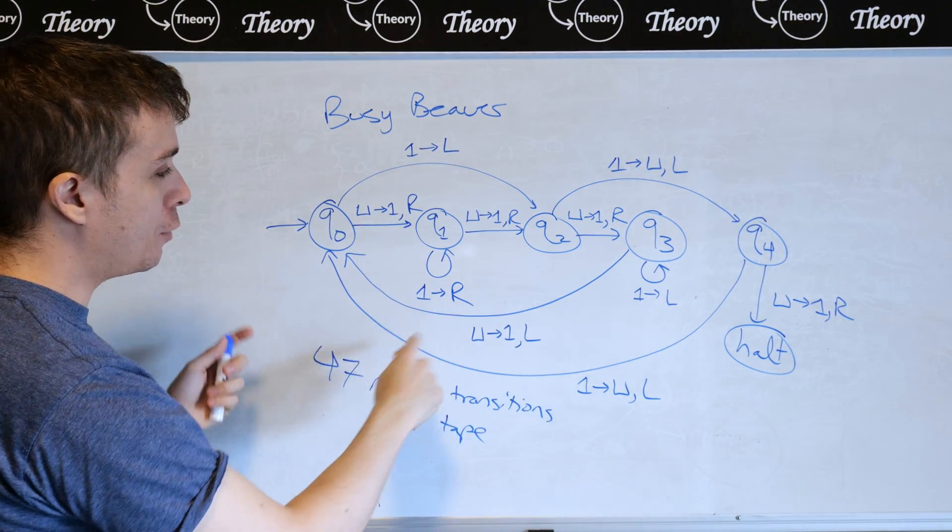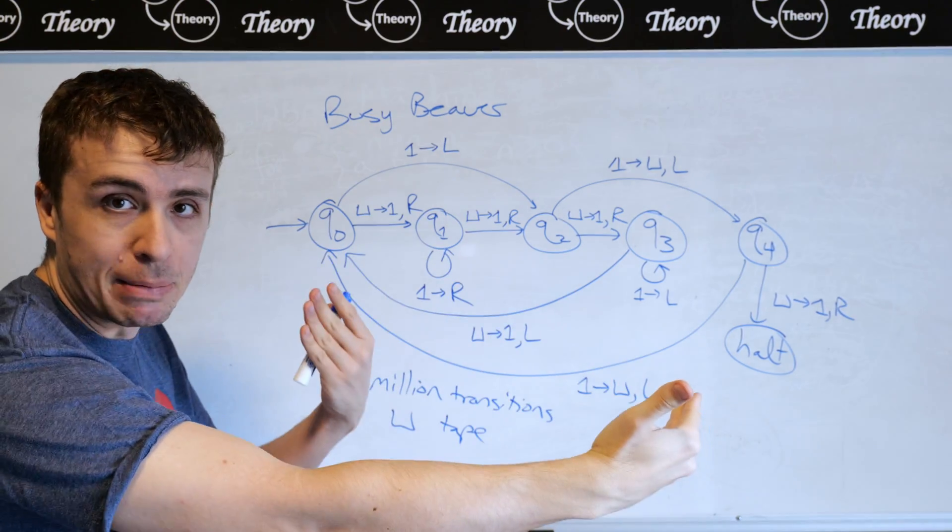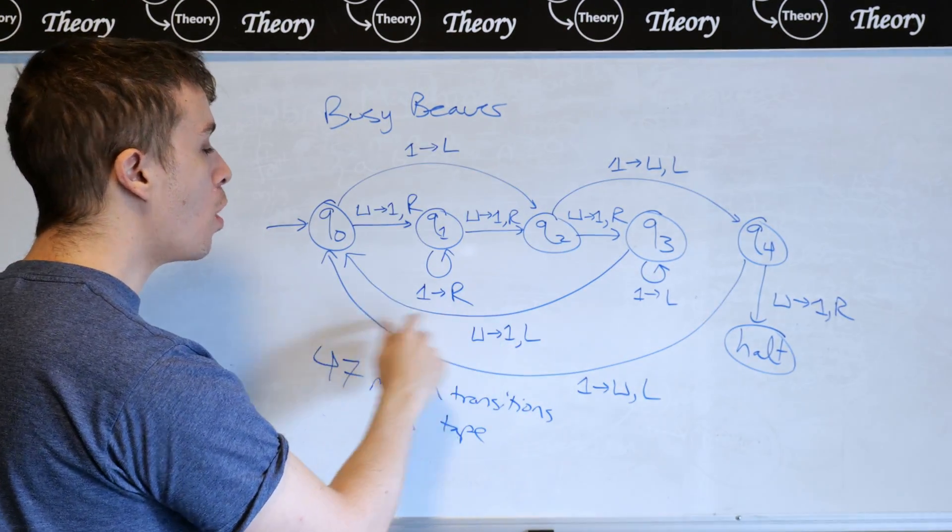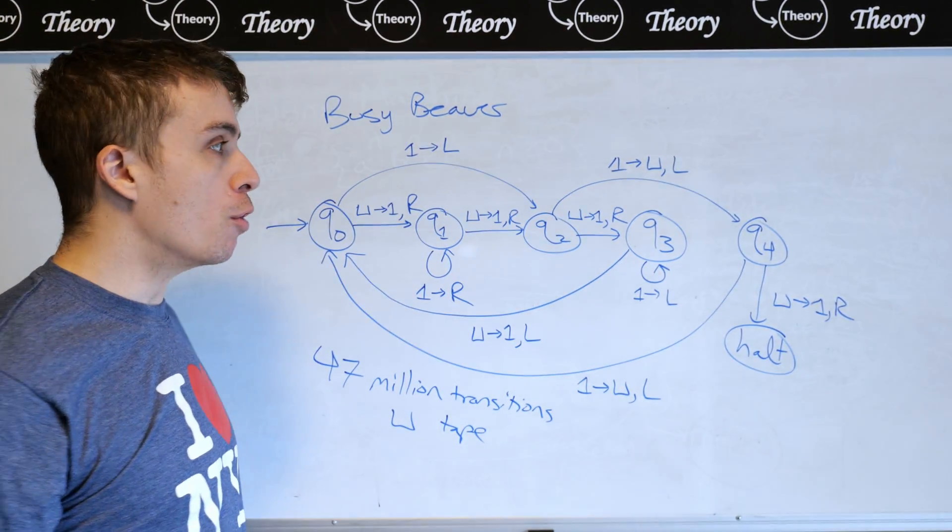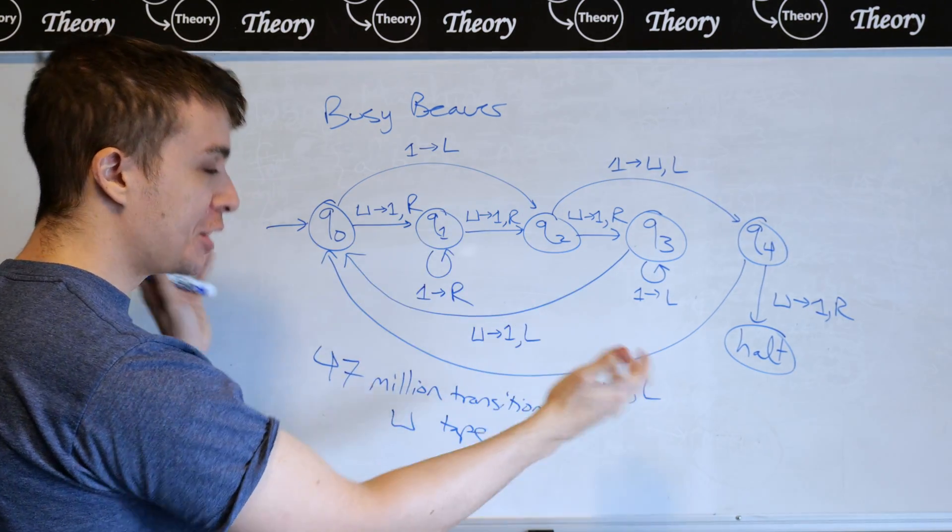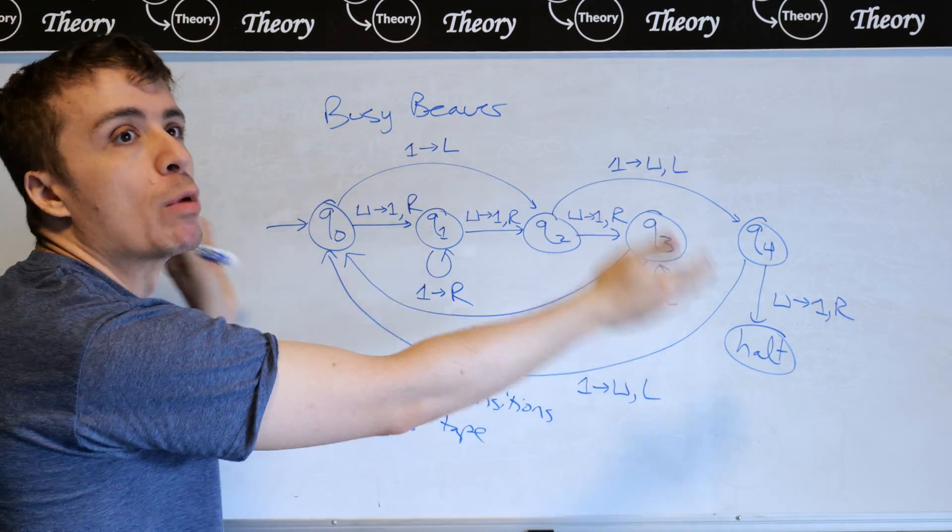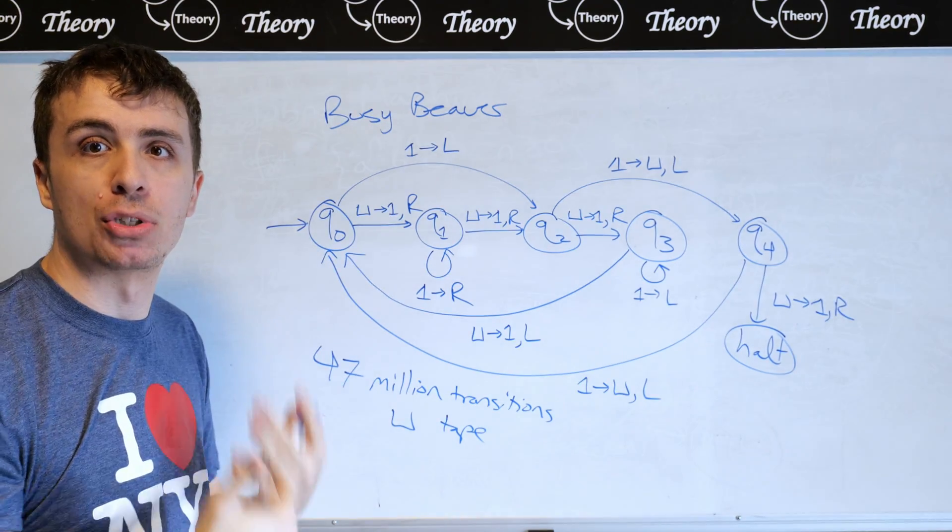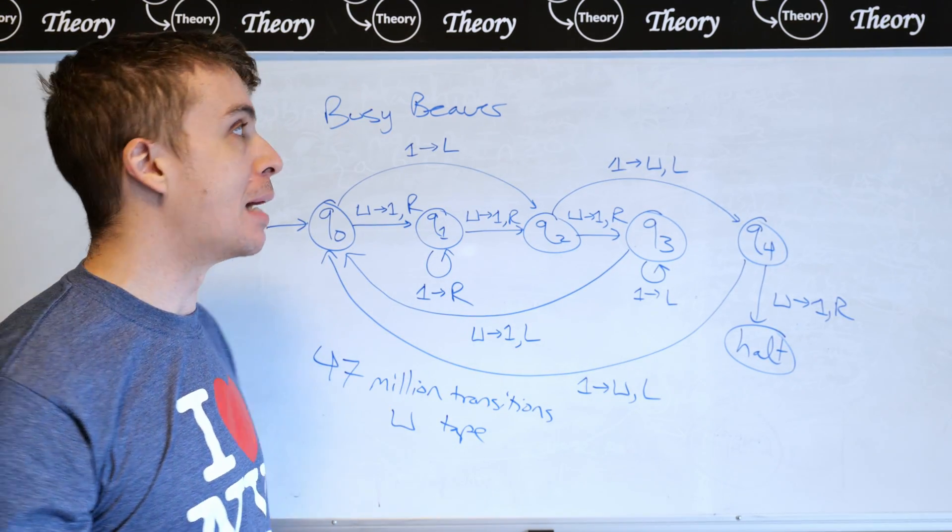So here we actually have two tape symbols, which is the blank symbol, which is what the tape starts out as, and a one. And what we want to know is how long this machine, or really any machine with five states and two tape symbols can run before it actually stops.